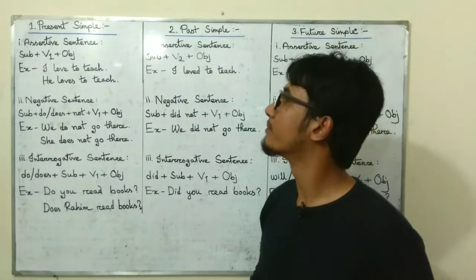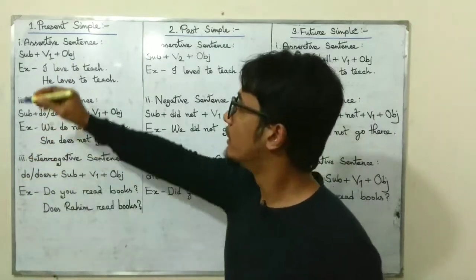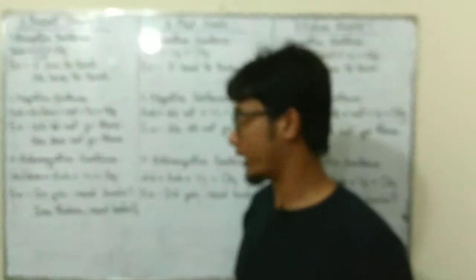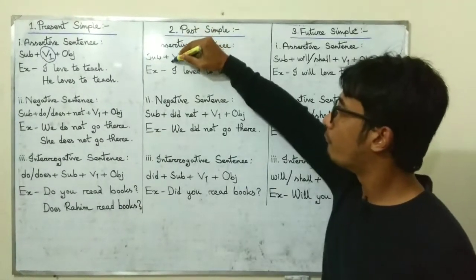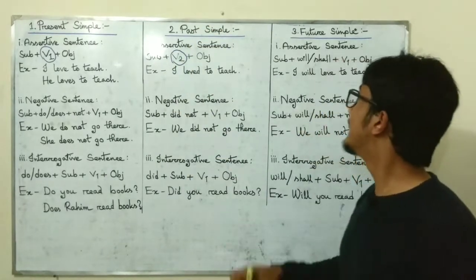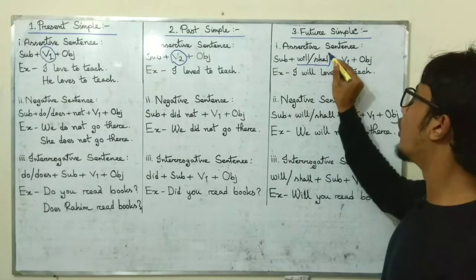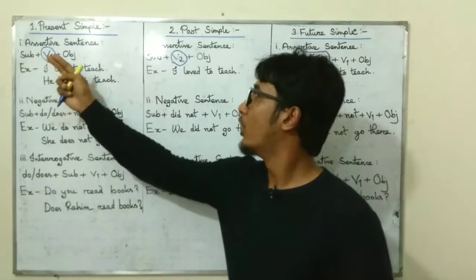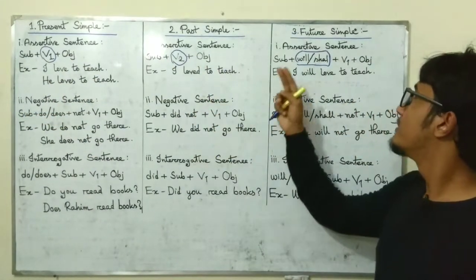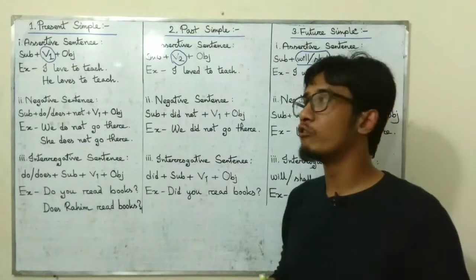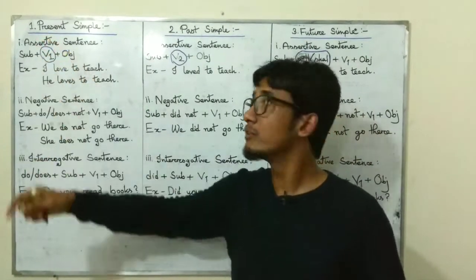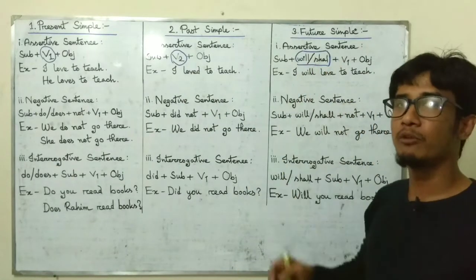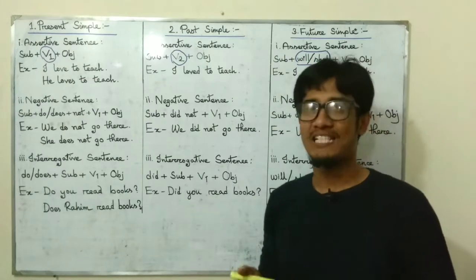So let's see the differences. In present simple the key difference is V1; in past simple it's V2; and finally in future simple it's shall or will. The other things — subject and object — remain the same. So if you only remember to use V1 in present simple, V2 in past simple, and will or shall before V1 in future simple, you will be able to make assertive sentences.